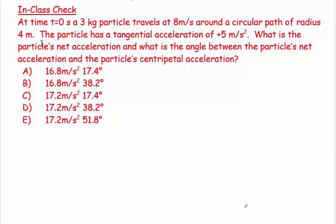This question says: at t equals 20 seconds, a 3 kilogram particle travels at 8 meters per second around a circular path of radius 4 meters. The particle has a tangential acceleration of plus 5 meters per second squared. What is the particle's net acceleration, and what is the angle between the particle's net acceleration and the particle's centripetal acceleration?